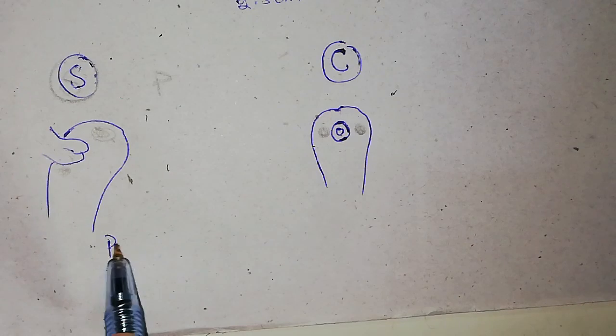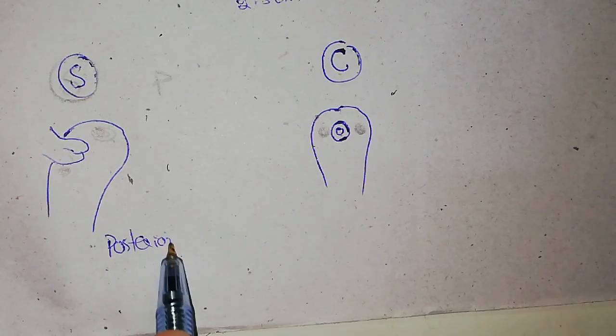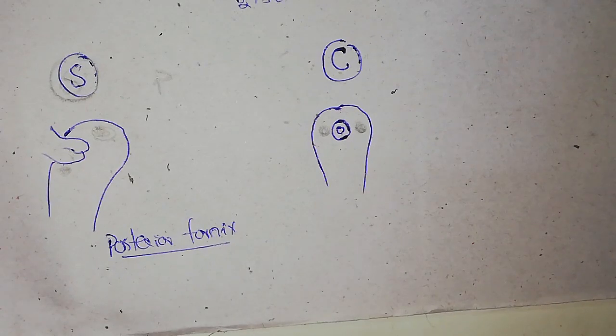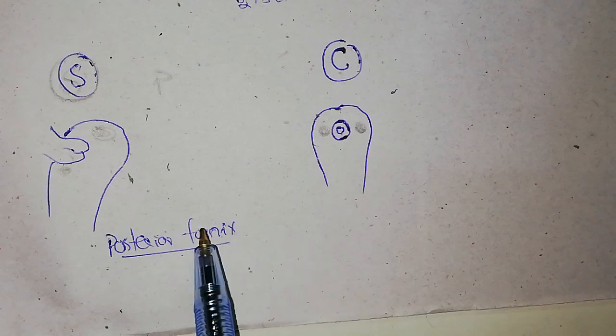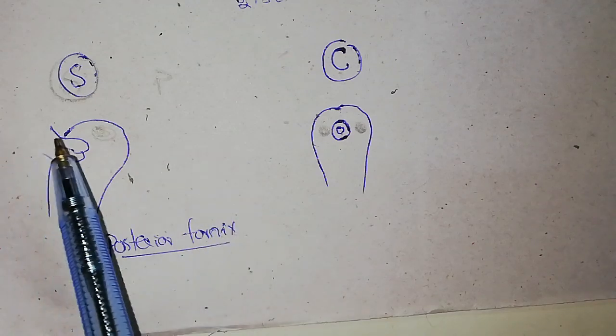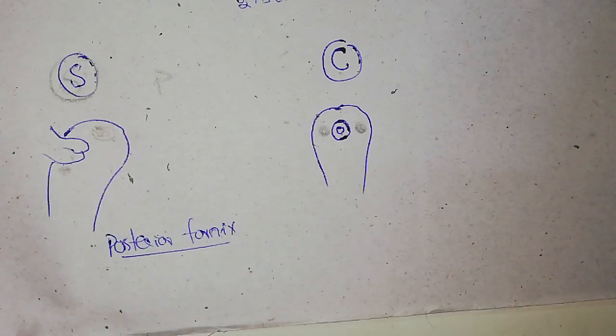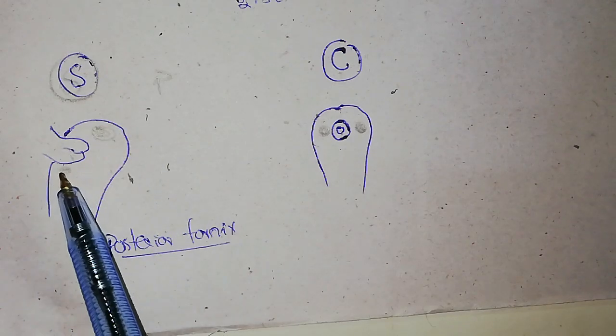Let me write that down: posterior fornix of vagina. It is the largest fornix of the vagina. Now, actually, what is fornix? Fornix is the space between the cervix and the wall of the vagina.